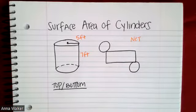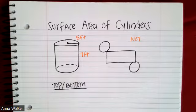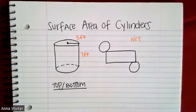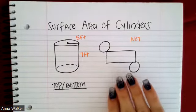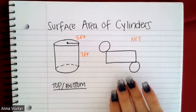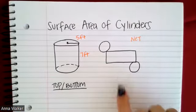If you think about a box — like an Amazon package — when you break down that box, what does it look like when it's completely flat and two-dimensional versus three-dimensional? So this is what the net of a cylinder looks like.